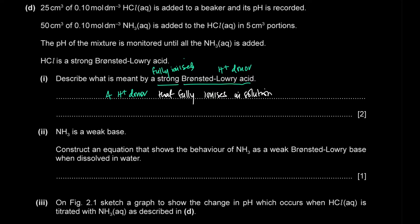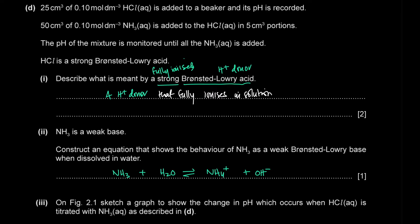Ammonia is a weak Brønsted–Lowry base. When dissolved in water, it partially ionizes: NH3 + H2O ⇌ NH4+ + OH−. Ammonia accepts a proton from water to form ammonium, while water donates a proton to become hydroxide, producing an alkaline solution.